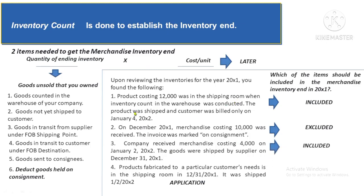Item 4: products fabricated to a particular customer's needs, in the shipping room on 12/31/20x1, shipped only on 1/2/20x2. Normally, goods still in your property at year-end would be included. However, because the products are customized for a specific customer, they are already considered sold and should NOT be included in your inventories. So, the rule is: goods in the packaging or shipping room are included unless they are customized for a specific customer.